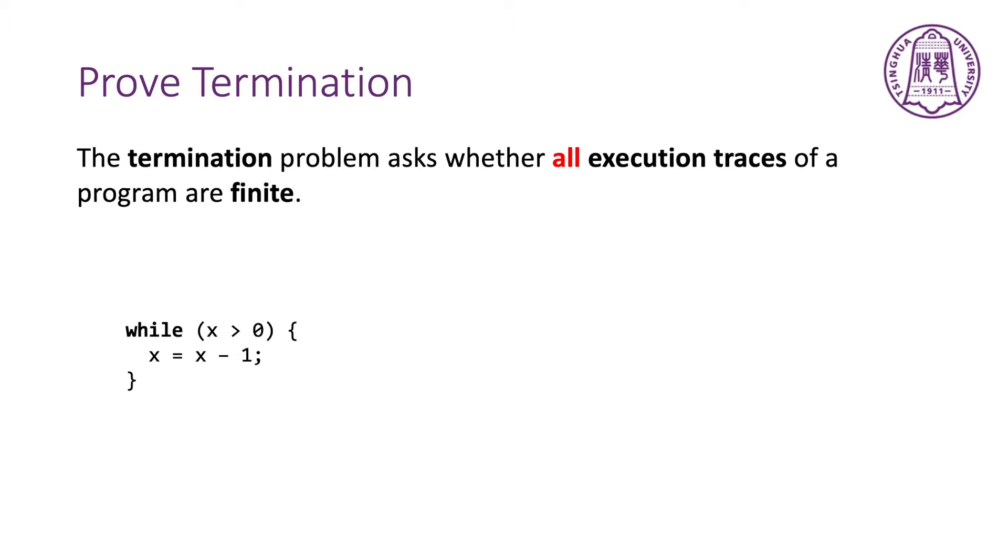Here is an example program. There are two basic paths in its control flow graph. The blue path is naturally finite. But how to prove the red path is finite?